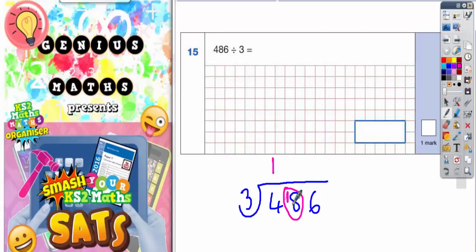How many threes make 18? Well, that goes exactly six times. Six threes make 18, no remainder, so there's nothing to carry over to this column. How many threes make 6? The answer is 2.